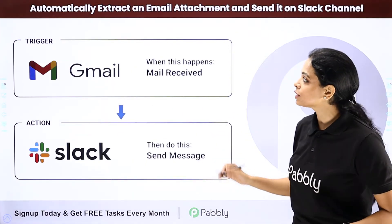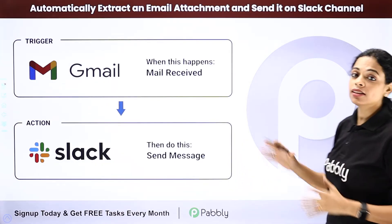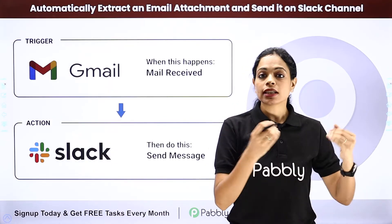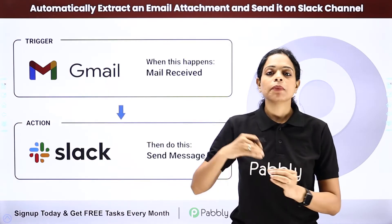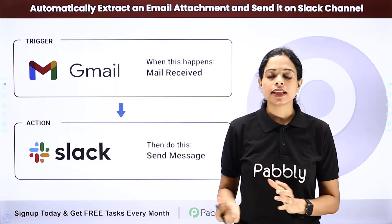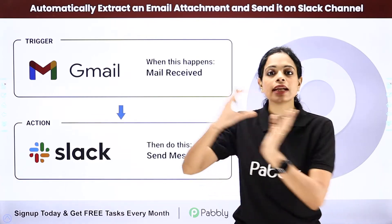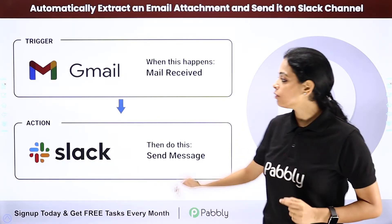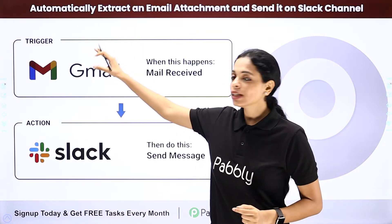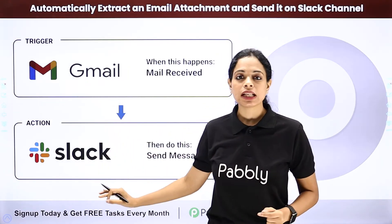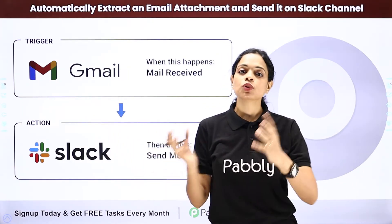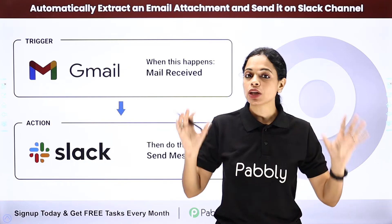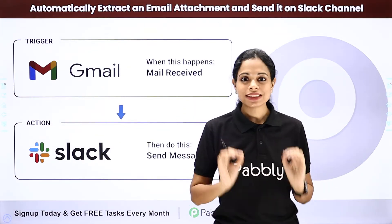Next, we have automatically extracting an email attachment and sending it to a Slack channel — this is my favorite. Because I have been receiving a lot of attachments and mails from my clients, maybe about their queries or anything, and I want those attachments to be taken and shared on Slack where my team is sitting. Again, I'll have to integrate these two applications. The trigger application would be Gmail and the action application would be Slack. Just imagine — every time you receive an email with an attachment, it will automatically go to Slack for your team. You won't have to waste your time forwarding it. Isn't that easy?